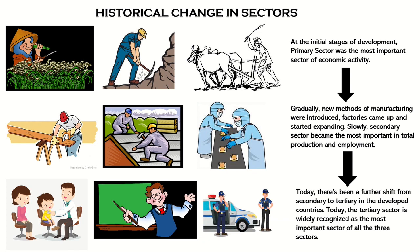Now we will look into the historical change or shift in sectors. In the initial stages, the primary sector was the most important sector and most people were employed in agriculture. With changes in farming methods, production increased tremendously and people could engage in other activities such as trading, becoming craftspersons and traders. The growing production of grains led to a need for transportation and other facilities, but most goods were still natural products from the primary sector.